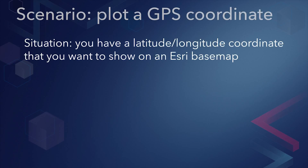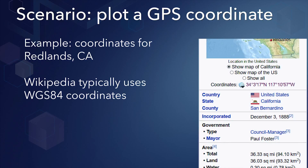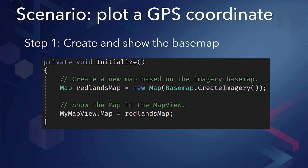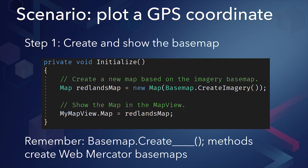Let's apply what I've talked about so far to a common scenario: plotting a latitude-longitude point on an Esri Web Mercator base map. I went to Wikipedia and found that Redlands, California is located at 34.05 north by 117.18 west. I know this is in the WGS84 coordinate system, which is different from the Web Mercator base map. The first thing I'll do is create the map with the imagery base map and show it in a map view. Remember, the base map factory methods in ArcGIS Runtime all create Web Mercator base maps.